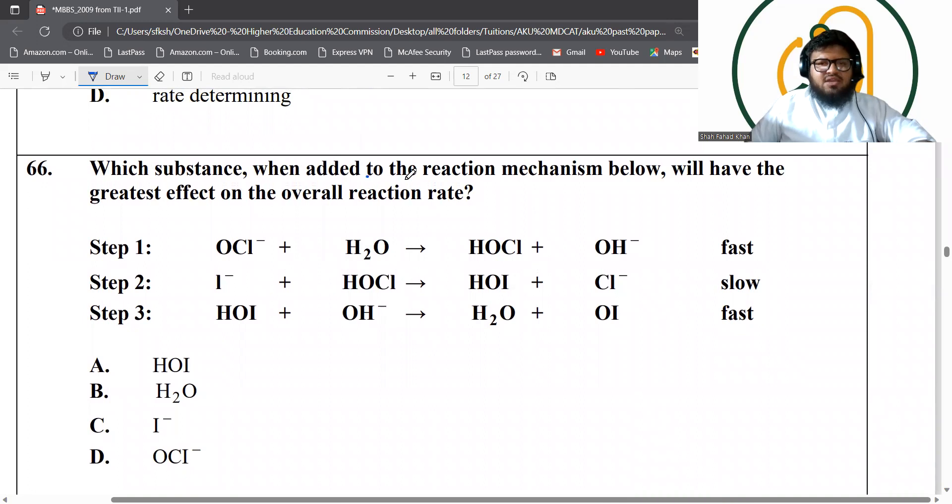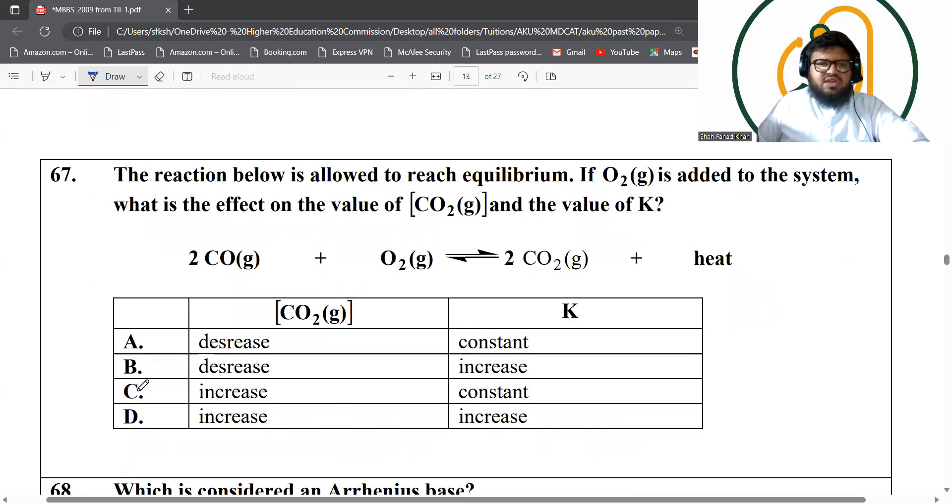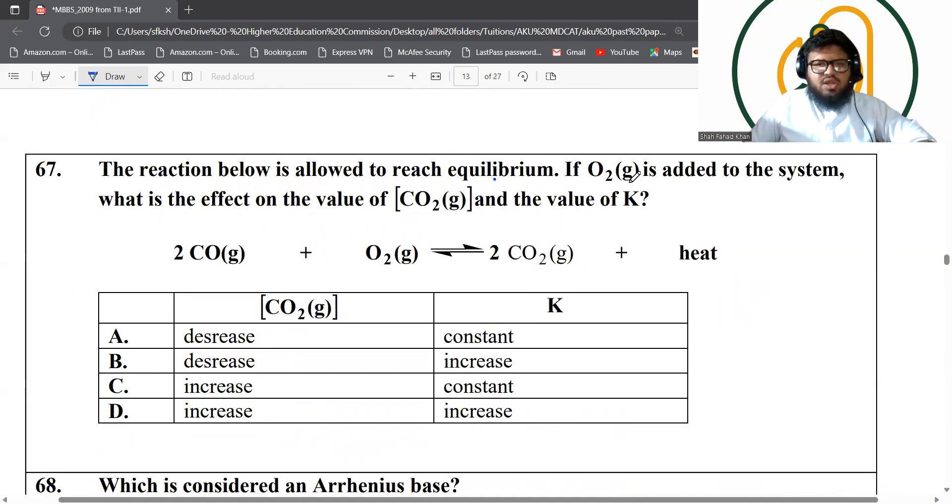Which substance when added to the reaction mechanism below will have the greatest effect on the overall rate? Always remember the rate determining step is the slowest step of the reaction and it's step two only. So step two. So if either you increase iodide or HOCl, will the rate change? So you have iodide in this option C.